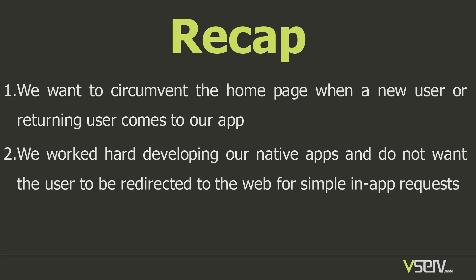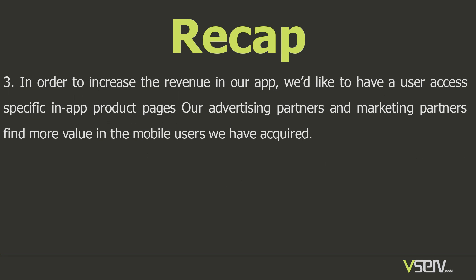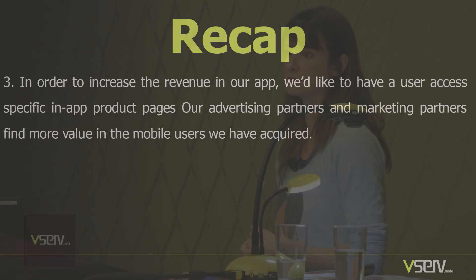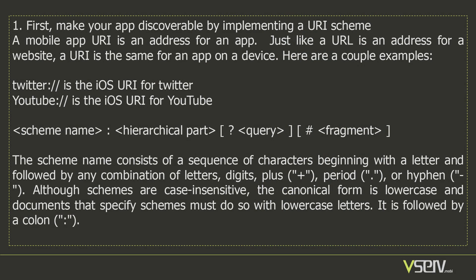So here are the things we're trying to accomplish — what you can do today. We're trying to circumvent the homepage when we already know and have a loyal user. We want our device to detect that person has our native app and not send them to a mobile website. We also want to make sure we have in-app product pages, and this relates to the next section about Google indexing these product pages. We're creating the deep link, registering it, and making sure that when somebody clicks your link there's a call.